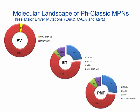JAK2 and MPL mutations activate the JAK-STAT pathway and were adequate to induce the MPN phenotype in animal models. CALR mutation has also been shown to converge on the JAK-STAT pathway. Recently, a French group reported that CALR mutations were sufficient to induce an MPN phenotype mimicking ET with later progression into myelofibrosis in a retroviral mouse model.